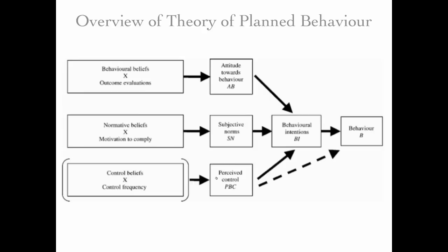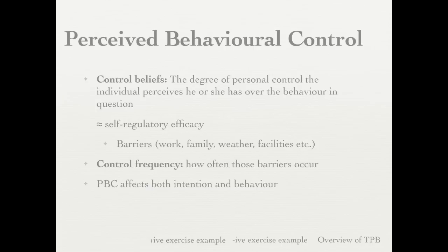The final construct is perceived behavioral control, which predicts both intention as well as behavior. If you're familiar with social cognitive theory, this is very similar to self-regulatory efficacy. There are two things that go into perceived behavioral control. The first is control beliefs — the control someone feels they have when there are behavioral barriers like work, family, weather, or facilities. This is really similar to self-regulatory efficacy.